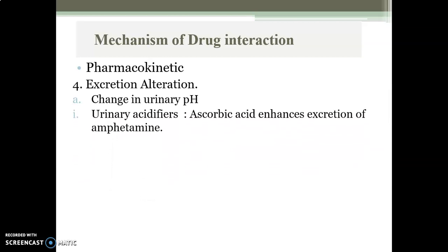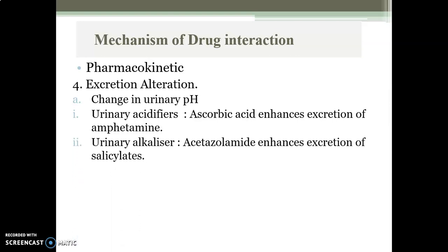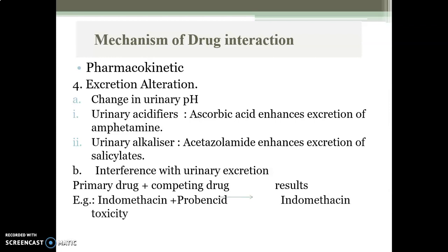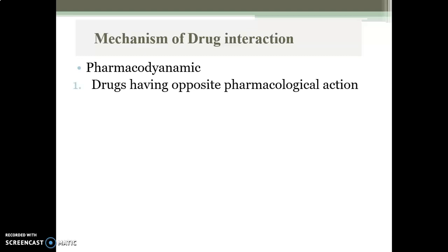The fourth pharmacokinetic mechanism is excretion alteration. First, change in urinary pH: ascorbic acid is a urinary acidifier making urine acidic, which enhances the excretion of amphetamine. Urinary alkalizers like acetazolamide make urinary pH alkaline and enhance excretion of salicylates. For interference with urinary excretion, probenecid competes with indomethacin for tubular secretion, increasing indomethacin serum levels and leading to indomethacin toxicity.